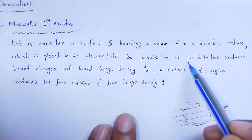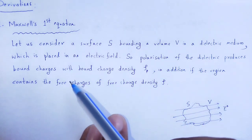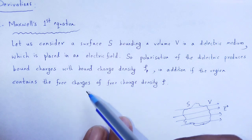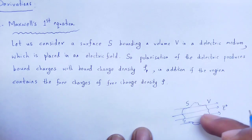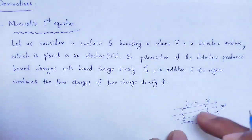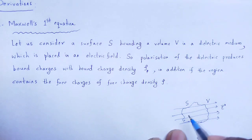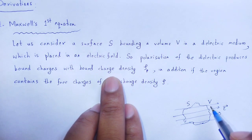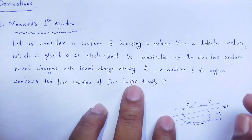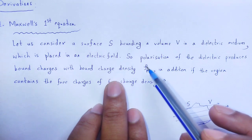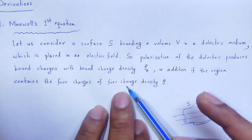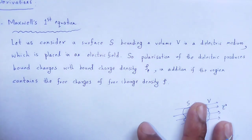The polarization of the dielectric produces bound charges with bound charge density rho_P. In addition, if the region contains free charges of free charge density rho, since we apply electric field to the dielectric having volume V with surface S, the electric field propagates through the surface S. Inside the dielectric it produces bound charges as well as free charges due to the process of polarization. The total charge is the combination of bound charge plus free charge, with charge density rho_P for bound charges and rho for free charges. Then we can use Gauss's law.